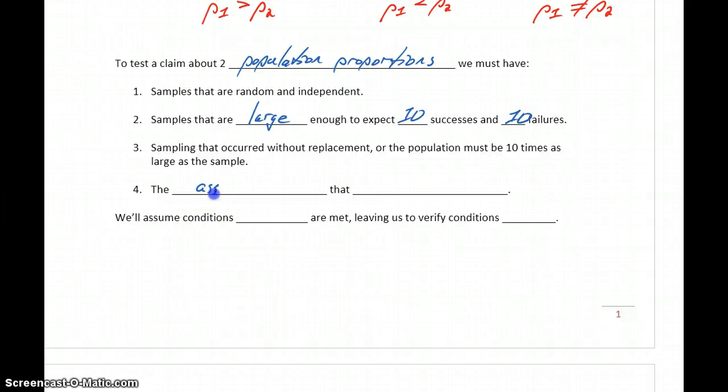And the assumption that the null hypothesis is true. So with hypothesis testing, that's always one of our initial assumptions. We assume that that null hypothesis is a true statement, unless there's enough evidence to discredit it. So we'll assume that conditions 1 and 3 are met, leaving us to verify conditions 2 and 4.